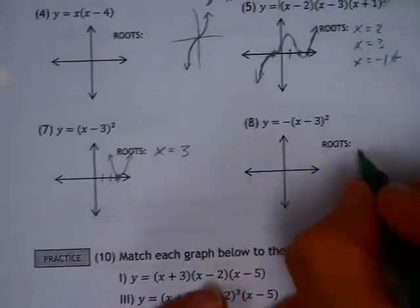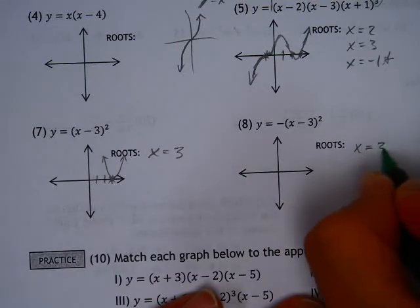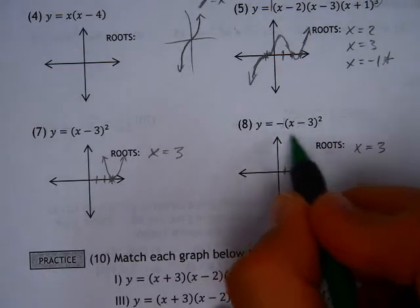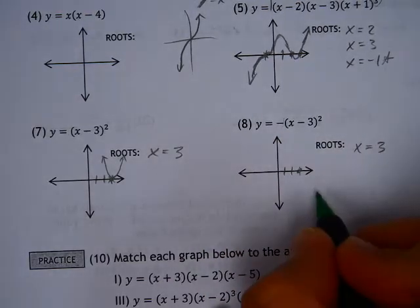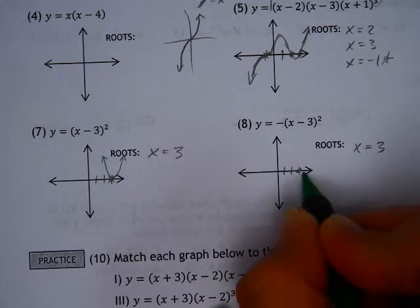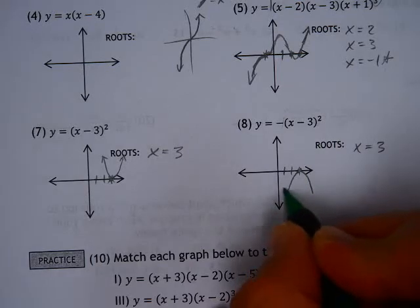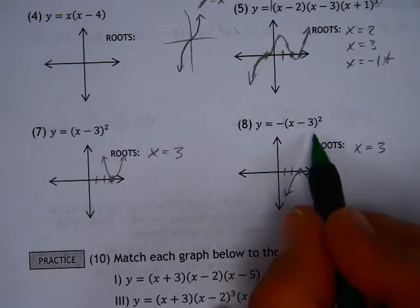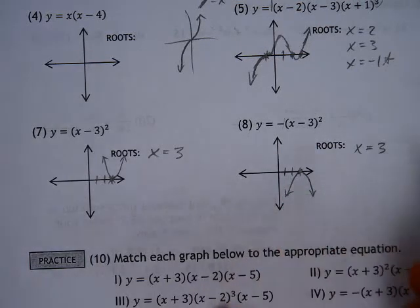This is another very similar one. The x-intercept is still going to be 3, 1, 2, 3. The difference is the end behavior is defined by a negative 1, which means it's upside down. End behavior also means it's going to go the same direction, since it's an even degree. It's a second degree polynomial, and so they're both going to be going the same direction, they're both going down.